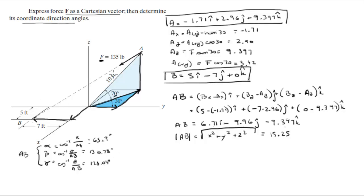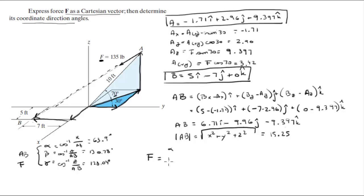Now, why are the angles of the dotted line important? Because when two vectors are aiming the exact same way, their coordinate direction angles are going to be the same. So all you have to do is multiply the cosine of each of these direction angles by the force magnitude, because the direction angles of AB are the same direction angles for F since they're both aiming the same way — along the dotted line. So F has the same direction angles: 63.9°, 130.78°, and 128.04°.